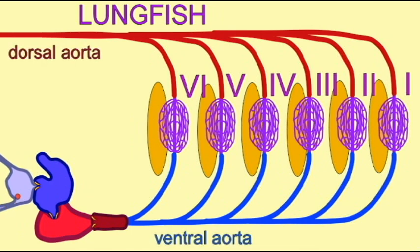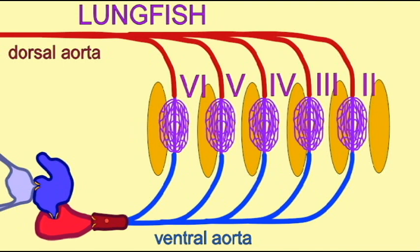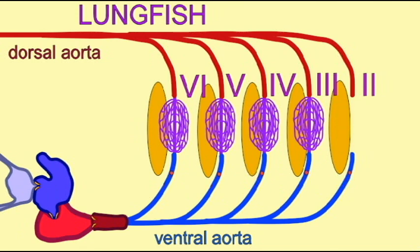The aortic arches of Sarcopterygian fish demonstrate a number of important changes. The first aortic arch and its gill slit have been lost. The second has been reduced.